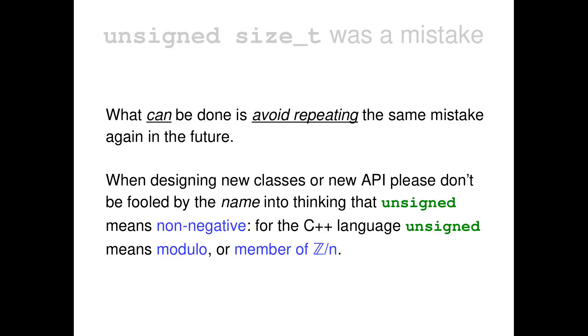Unsigned may resemble non-negative in English, but has completely different meaning for the language. For the C++ language, unsigned means modulo, or member of Z over N. That's what unsigned is. If you are not going to use this modulo mathematics, or if you are not going to use the bits, the individual bits, then using unsigned is the wrong choice.